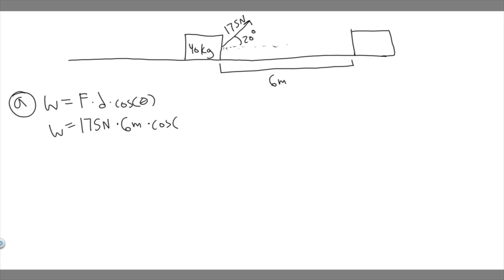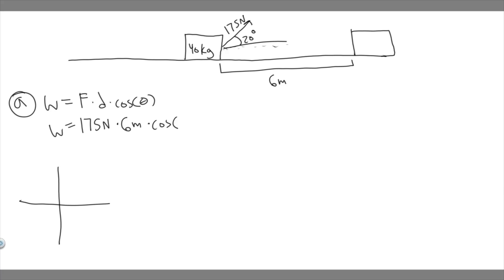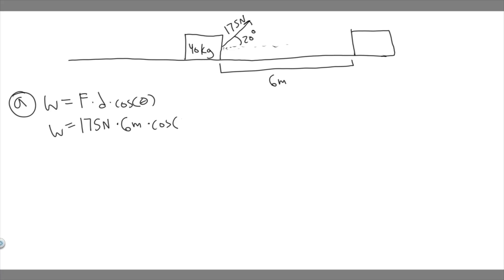Theta is the angle between where the force is being applied and the direction the crate is traveling. The crate moves along the horizontal, and the force is applied at 20 degrees above the horizontal. So theta equals 20 degrees. We plug in: 175 newtons times 6 meters times the cosine of 20 degrees.